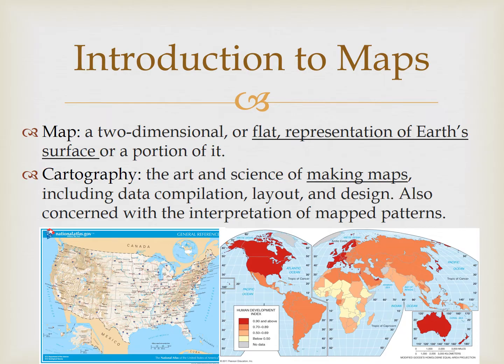No map is perfect, and no map can show us everything. So cartographers have important choices to make when they create maps. Those choices will be the focus of this lecture. There are two major categories of maps: reference maps and thematic maps.